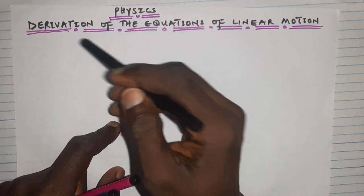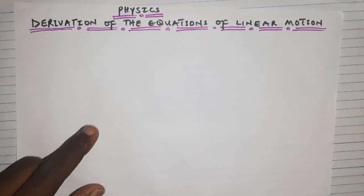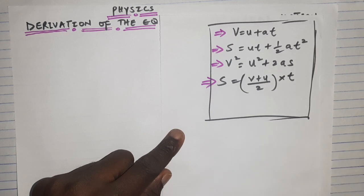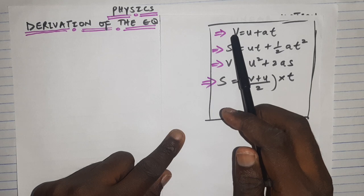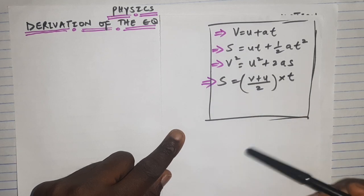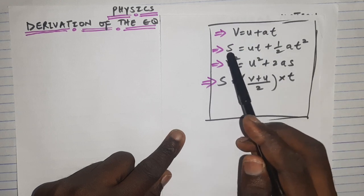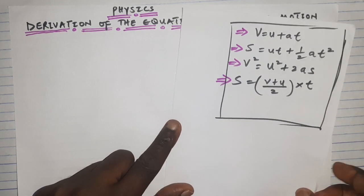Let's look at the derivation of the equations of linear motion. These are the equations we're talking about, where v is the final velocity, u is the initial velocity, a is acceleration, t is time, and s is distance. Let's see how we are going to derive them.